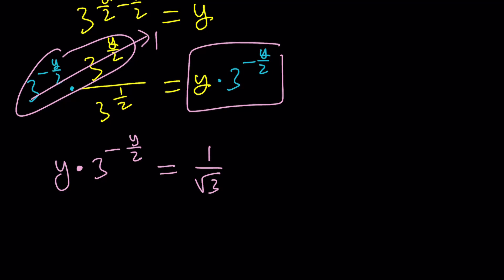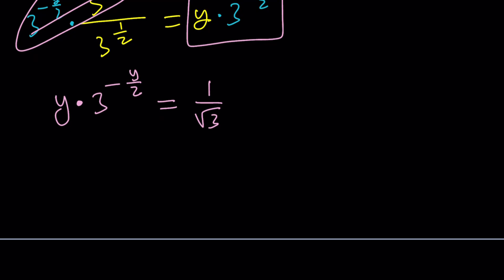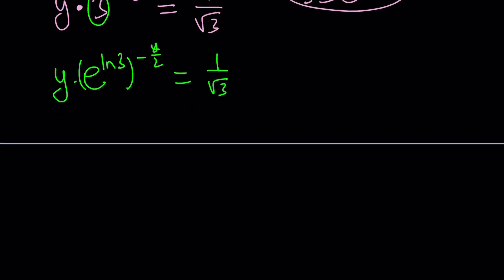So far, so good? We haven't used our special function yet because we have to prep it first. Here's what I'm going to do next. I'm going to use the fact that 3 equals e to the power ln 3 and replace this 3 with that. And that's going to give me y times e to the power ln 3 to the power negative y over 2 equals 1 over root 3. Now, let's multiply the exponents here. And we can write it as y times e to the power negative y over 2 times ln 3. And on the right-hand side, I'm just going to turn this into root 3 over 3 by multiplying by the conjugates.